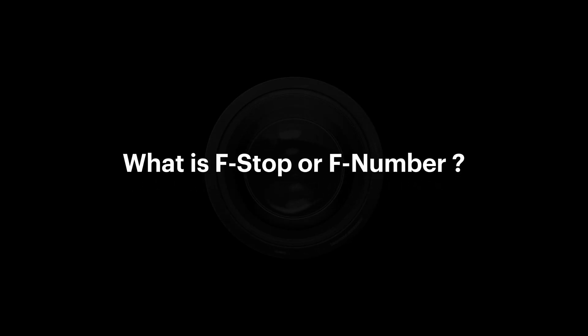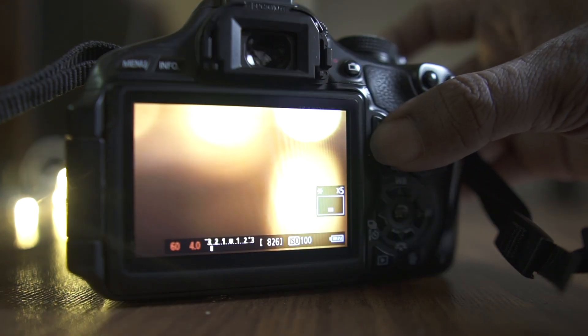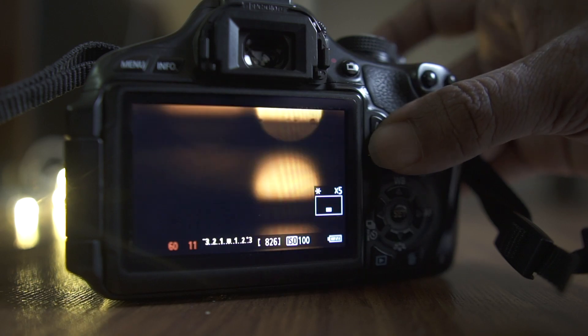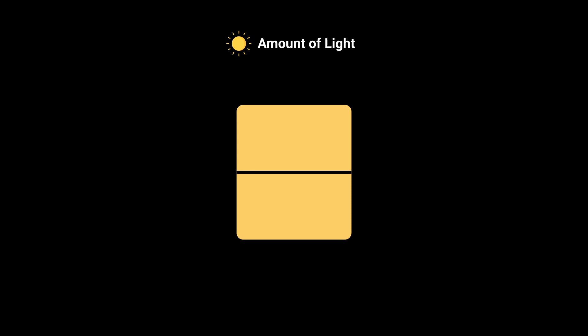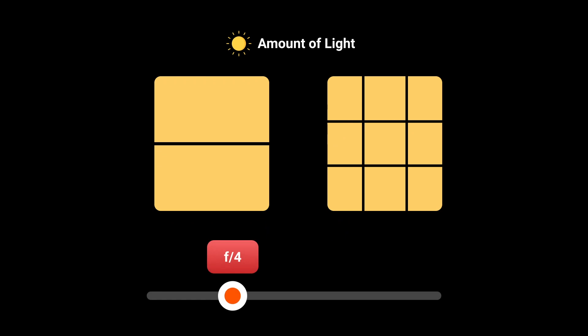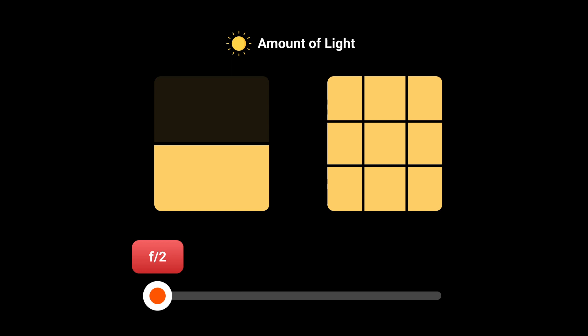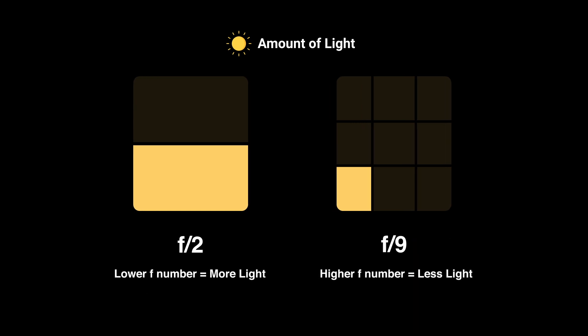So far we have only discussed aperture in general terms like large and small. However, it can also be expressed as an F number or F stop. F numbers are a way of describing the size of the aperture for a particular picture, with the letter F appearing before the number, like F8, F2, F4, etc. Imagine a box as the amount of light — divide it in two parts. Now take another box and divide it in nine parts. If we set our aperture to F2, we get a large portion of light. But if we set it to F9, we get only a small portion. The higher the number, the less the amount of light. So remember: higher the F number, smaller the aperture size; lower the F number, wider the aperture.